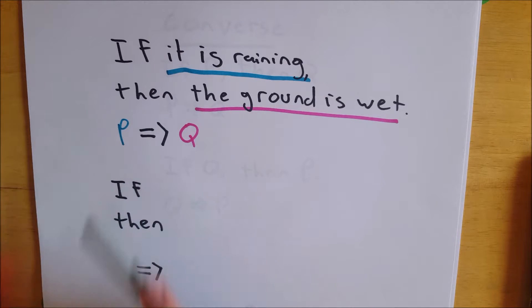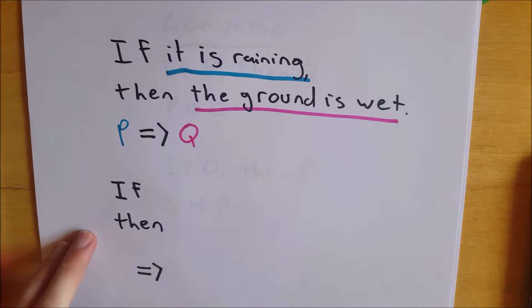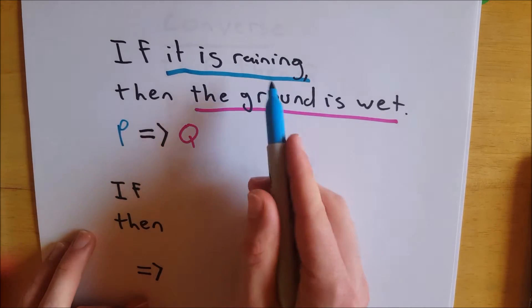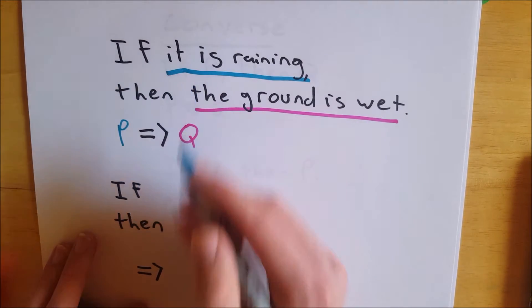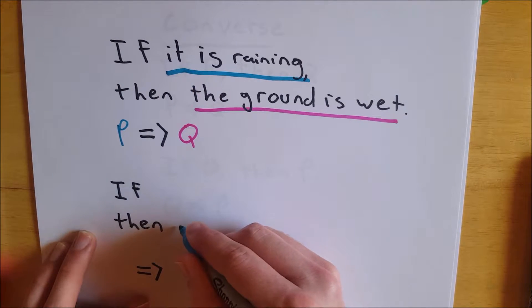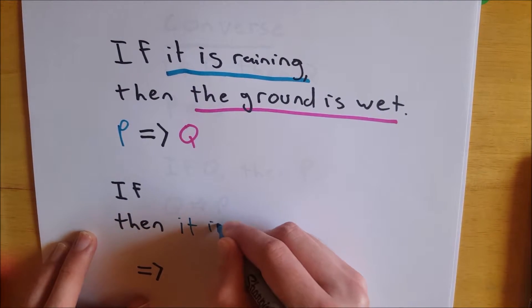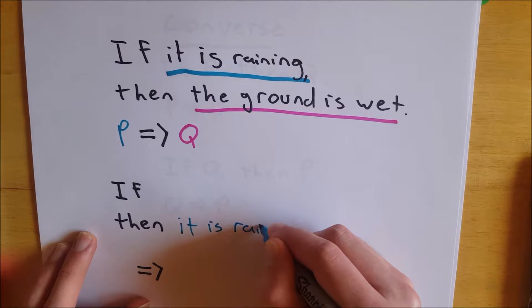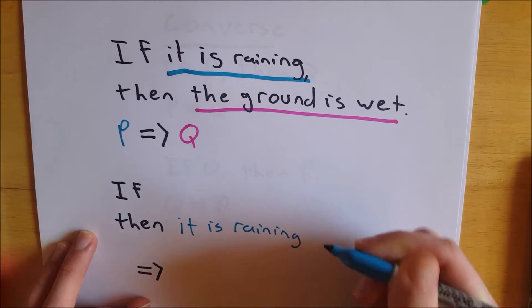And like I said, all you have to do is switch your Q and P around. So if we write that, remember P is our light blue here, it is raining. So that was our if, now it's going to be our then. So then, it is raining, is the then part of the statement.